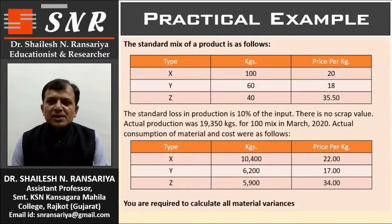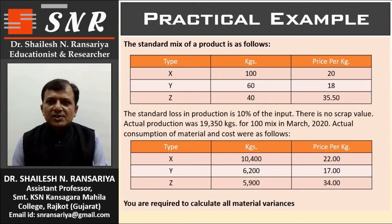The standard mix of a product is as follows. Type of material X, Y, Z — kilograms: 100, 60, and 40. Price per kilogram: 20, 18, and 35.5. The standard loss in production is 10% of the input. There is no scrap value.